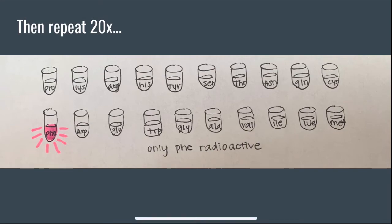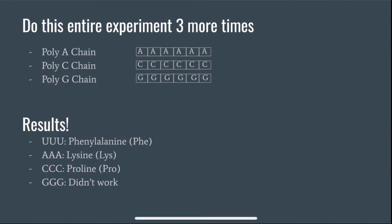Nirenberg and Matthaei found that phenylalanine was the only amino acid that formed a protein with the poly-U chain. So, they repeated the entire experiment three different times with the poly-C, poly-A, and poly-G chain.